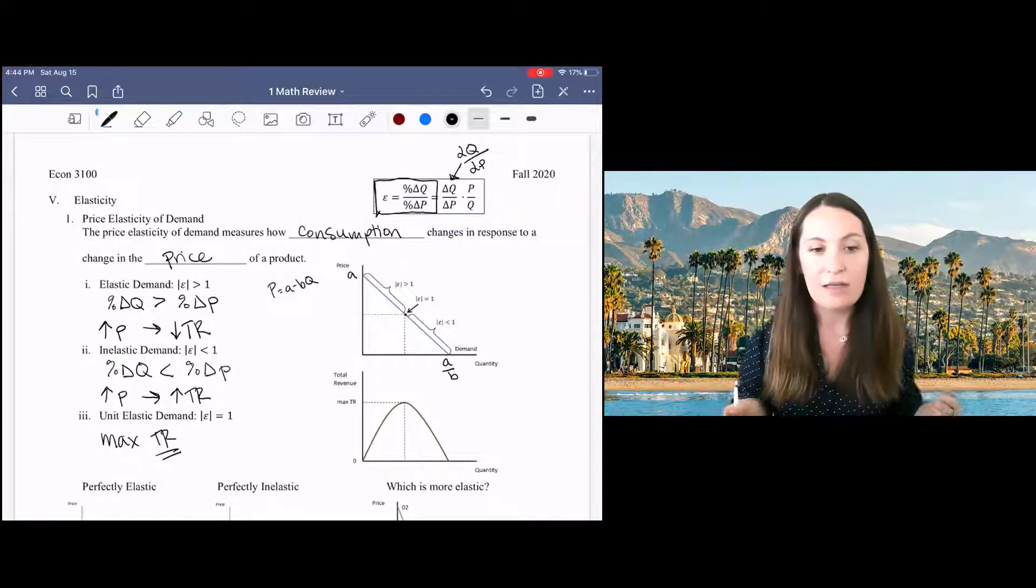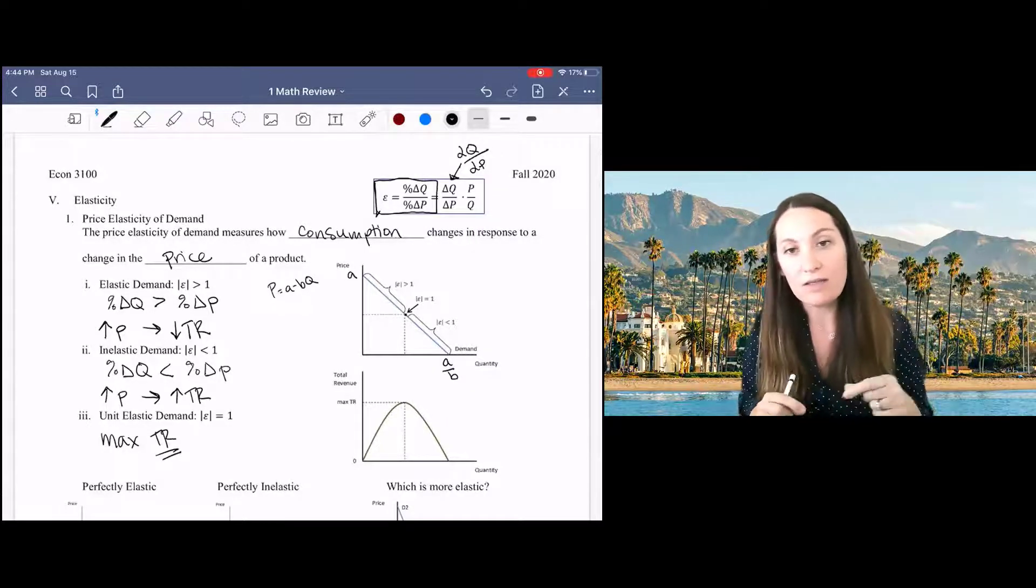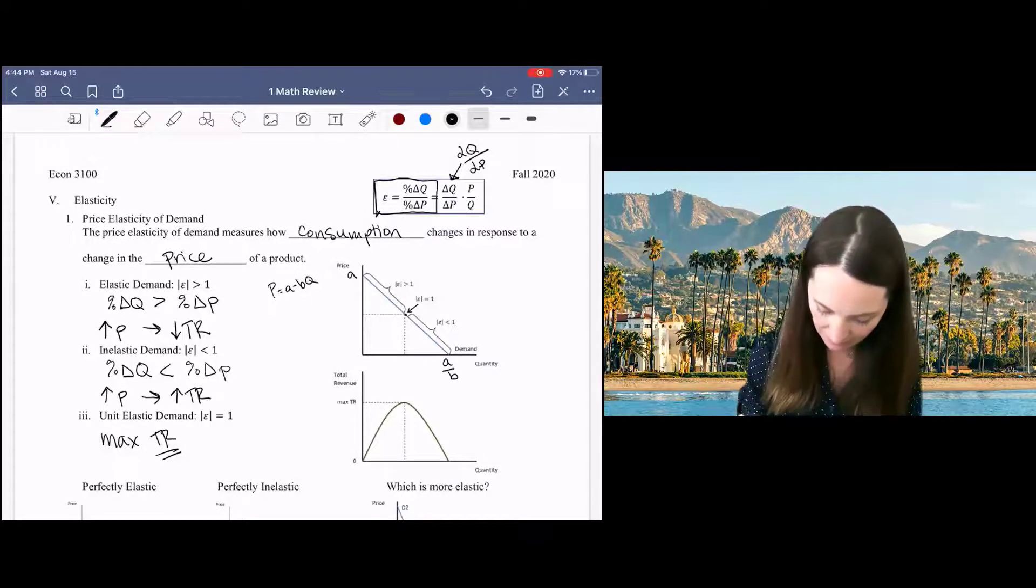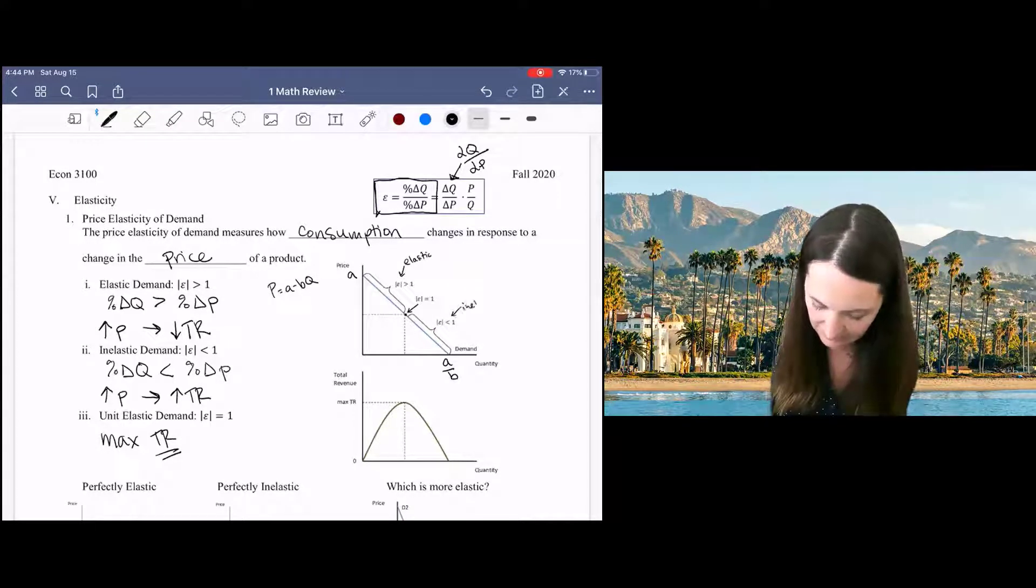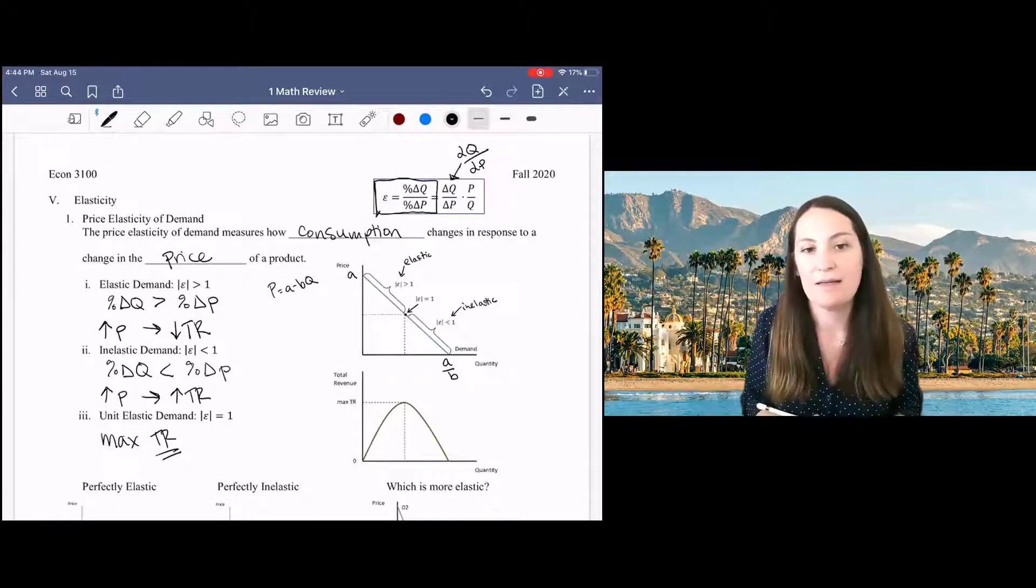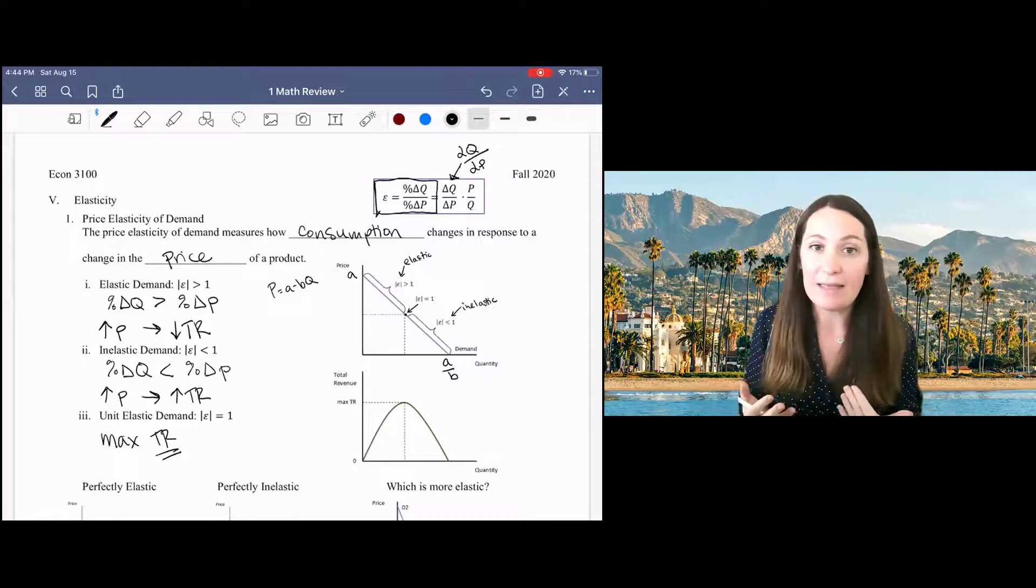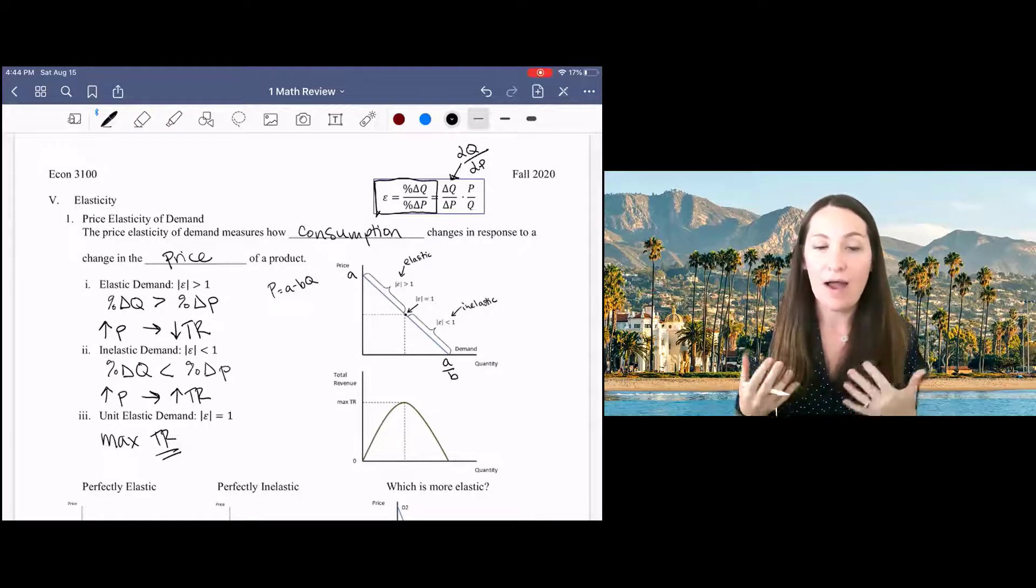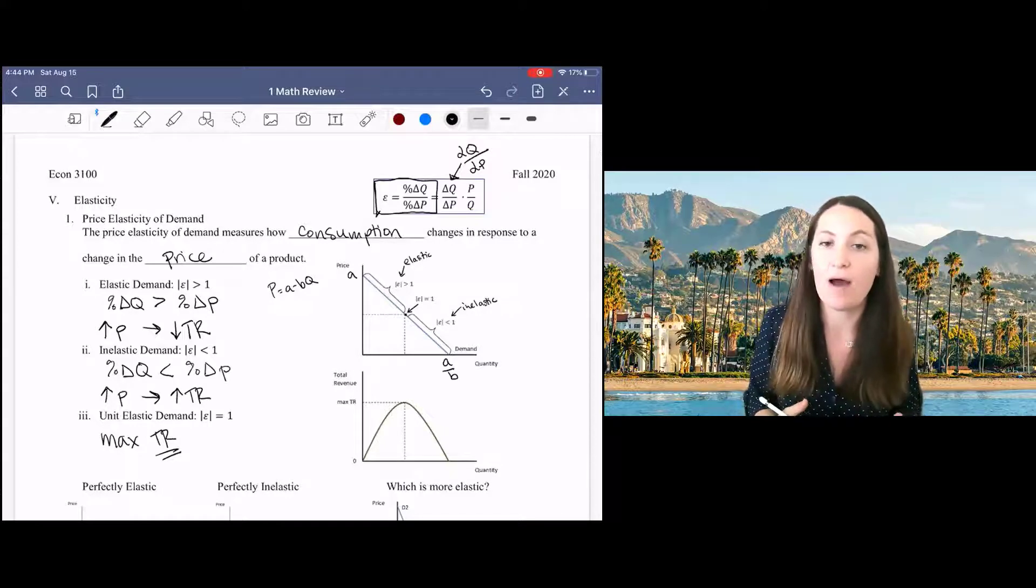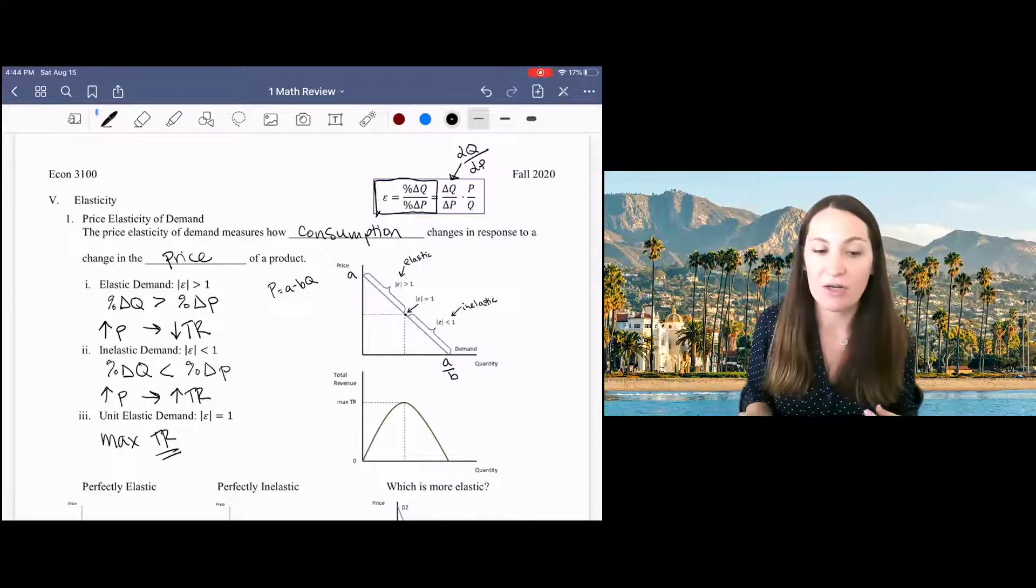And you can see that all along the demand curve, each point has a different elasticity. Up here, it's elastic. Down here, it's inelastic. And in the middle, it's unit elastic. To understand why that is, I want to think about how to write our total revenue equation and how total revenue varies with quantity based on this demand curve.